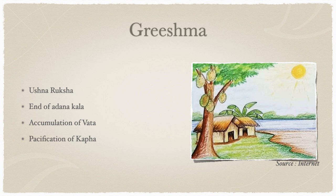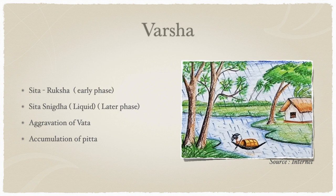In grishma ritu, by nature there is ushna and ruksha. It is the end of adana kala, and there is accumulation of vata because ruksha is present but shita is not — only accumulation. This ushna and ruksha nature is against kapha, so there is pacification of kapha. Moving to varsha ritu, suddenly ushna changes to shita because of clouds, rain, and cold wind, creating shita and ruksha in the early phase of monsoon — and vata aggravates.